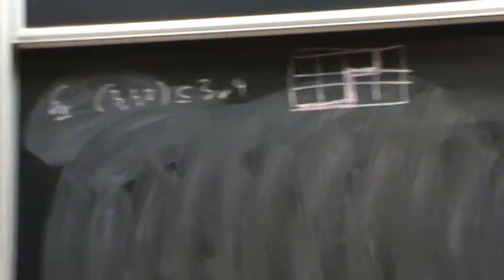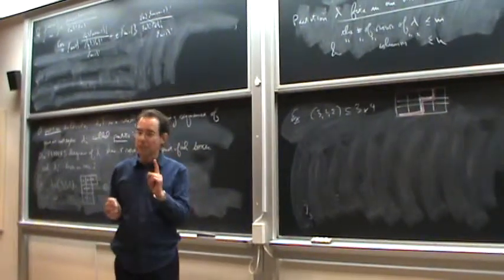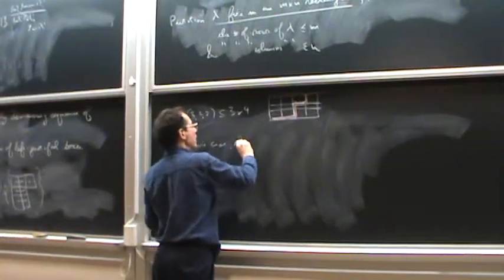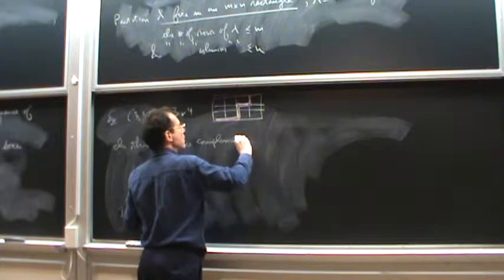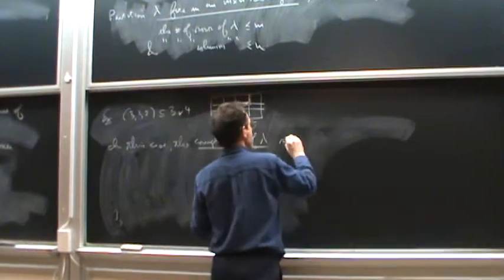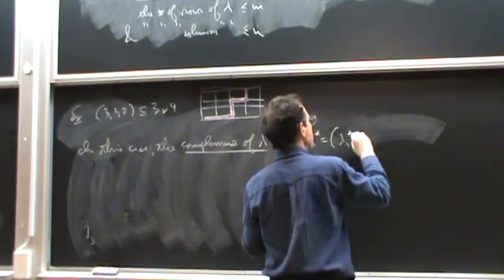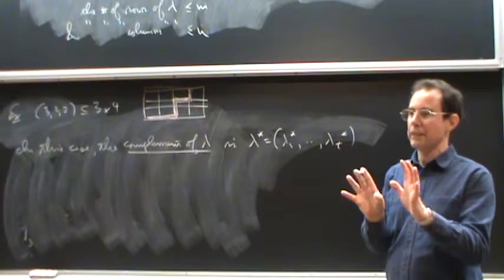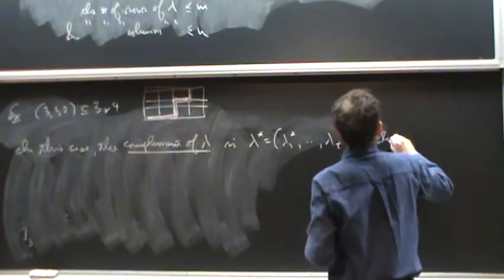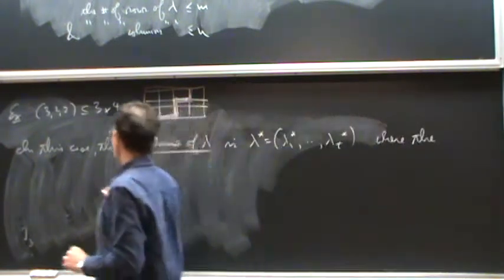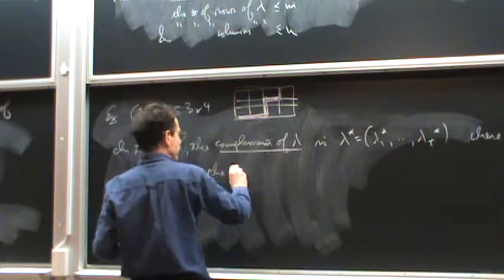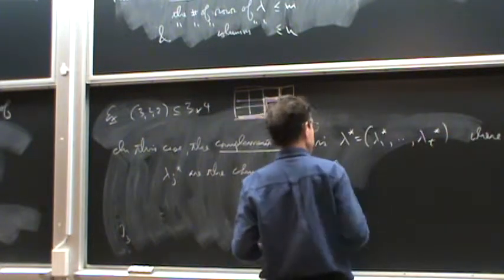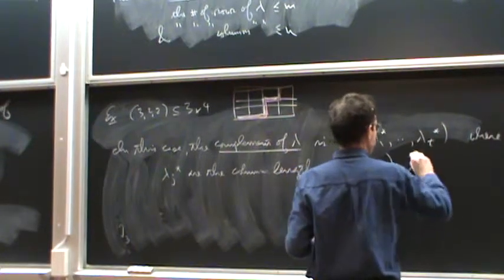Now, in this case, the nice thing about this is that we now have not just one partition, but two. So in this case, the complement of lambda, I'll call lambda star, say lambda 1 star up through lambda T star. Now, this is going to depend upon the rectangle you put it in, but you'll always know what size rectangle I'm putting things in, so that won't be a problem. Where the lambda j star are the columns, column lengths of the complement of the rectangle with lambda removed.